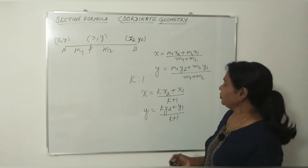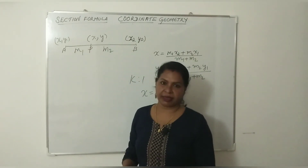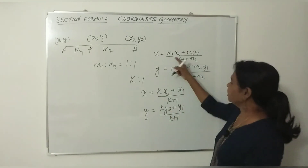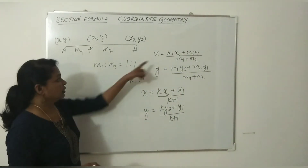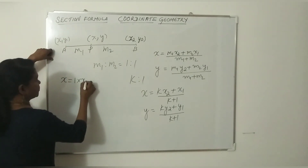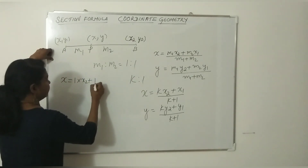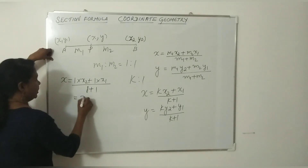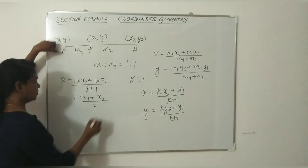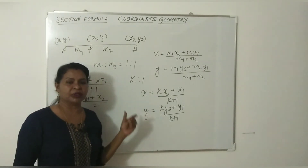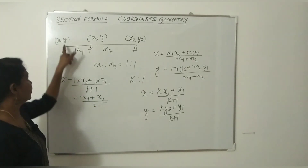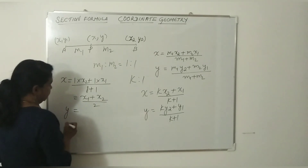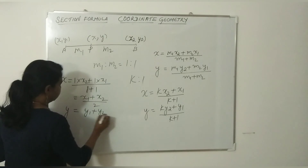This is easy. Now, suppose this point is the midpoint of this line. If the ratio M1 to M2 is 1 to 1, then you have 1 into X2 plus 1 into X1 divided by 1 plus 1 — that is X1 plus X2 divided by 2. This point is the midpoint. Then you can use this midpoint formula: x equals X1 plus X2 divided by 2. Similarly, the y coordinate can be found using Y1 plus Y2 divided by 2. That gives the midpoint.